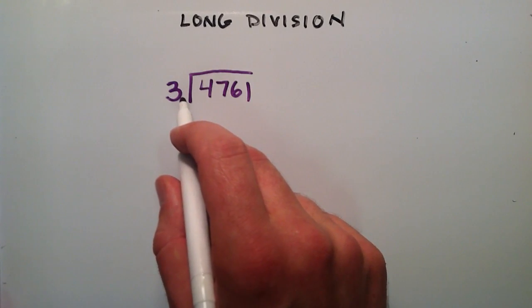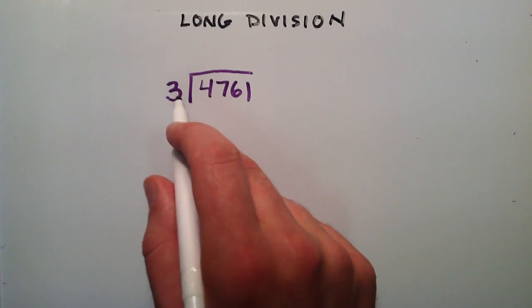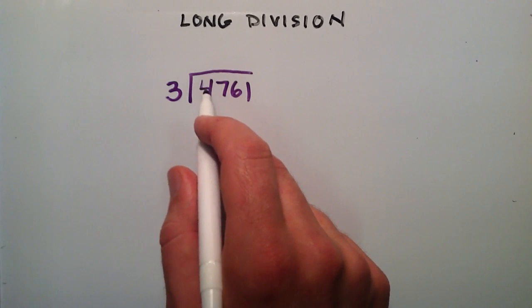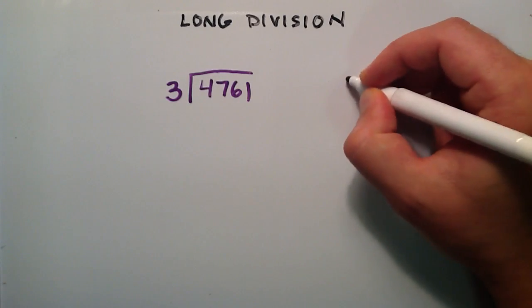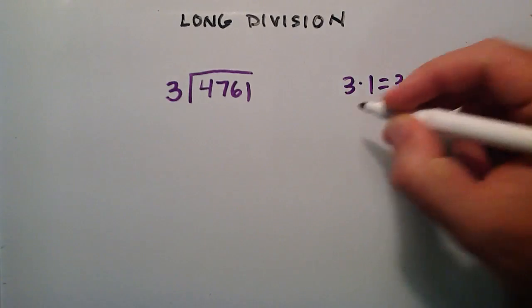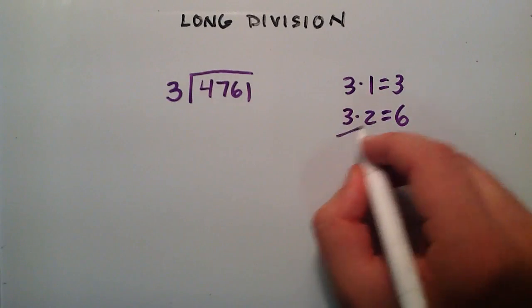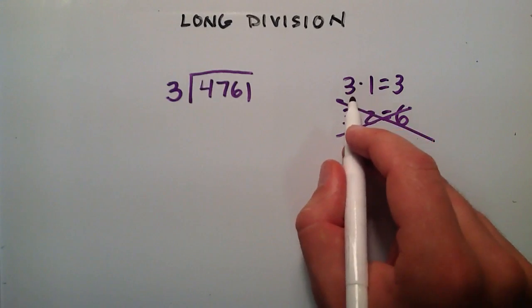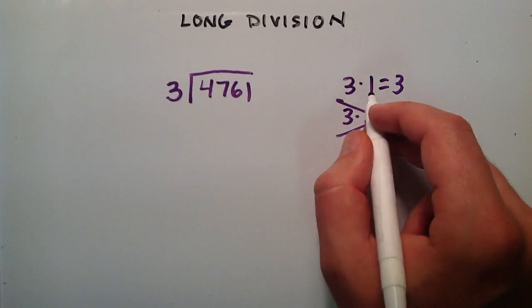So what we're going to do is ask ourselves, what is the biggest number that we can multiply 3 by and have a result that is less than this first part right here, less than the 4. So 3 times what is less than 4? Well, 3 times 1 is 3. 3 times 2 is 6. Well, 6 is bigger than 4 so therefore this result's out of the picture. So it turns out that 1 is the biggest number we can multiply 3 by and have a result that's less than 4. So because of that, we're going to put the 1 here.